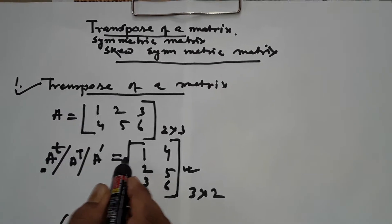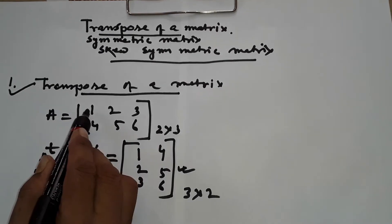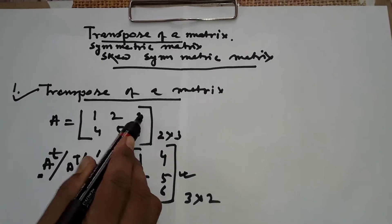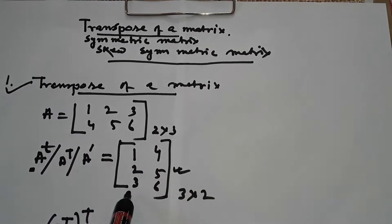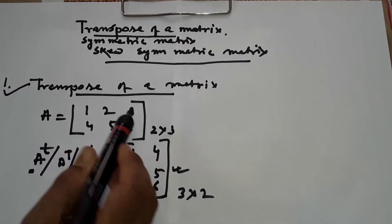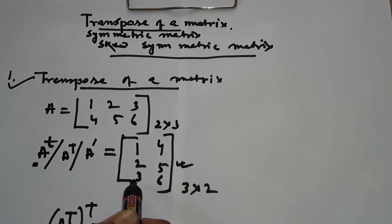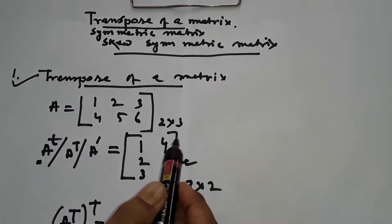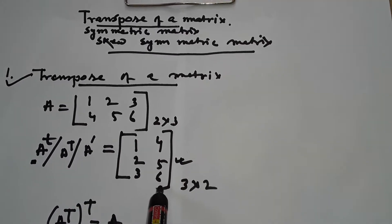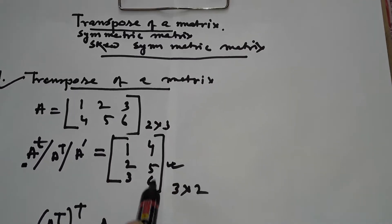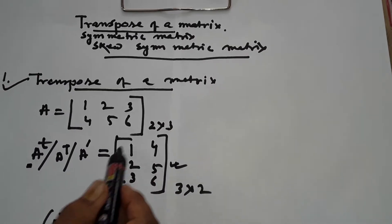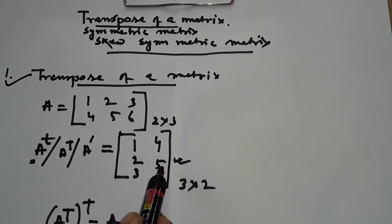Then the rows change into columns: 1, 2, 3 change into a column, and 4, 5, 6 change into a column — giving the transposed matrix. This is called the transpose of a matrix.